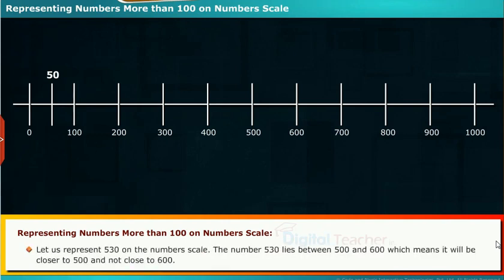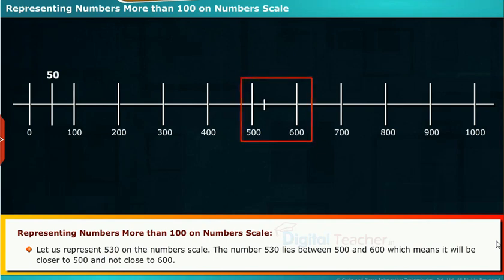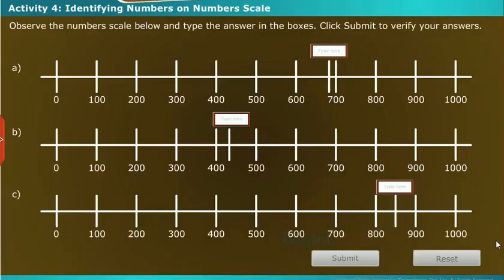Let us represent 530 on the number scale. The number 530 lies between 500 and 600, which means it will be closer to 500 and not close to 600. Let us perform an activity to identify the numbers more than 100 on a number scale.